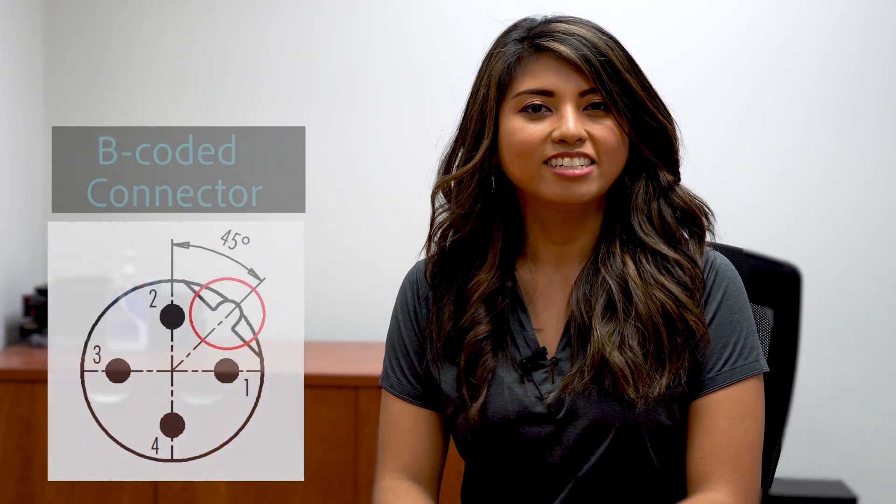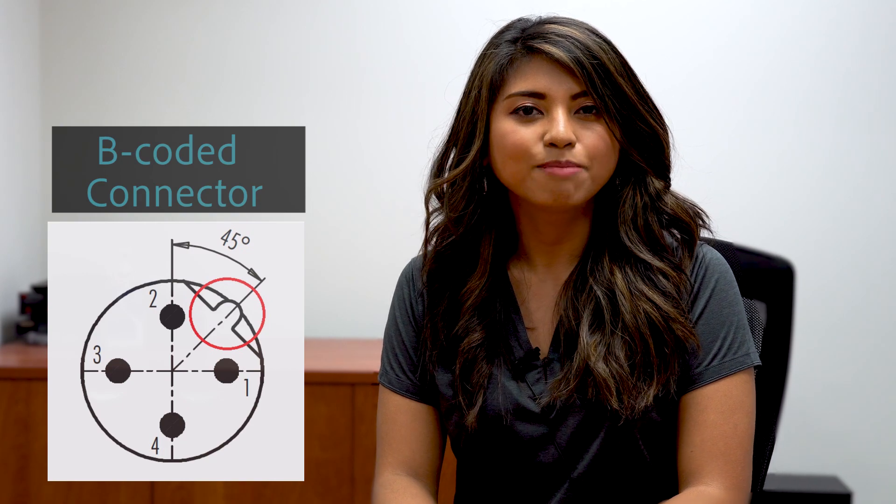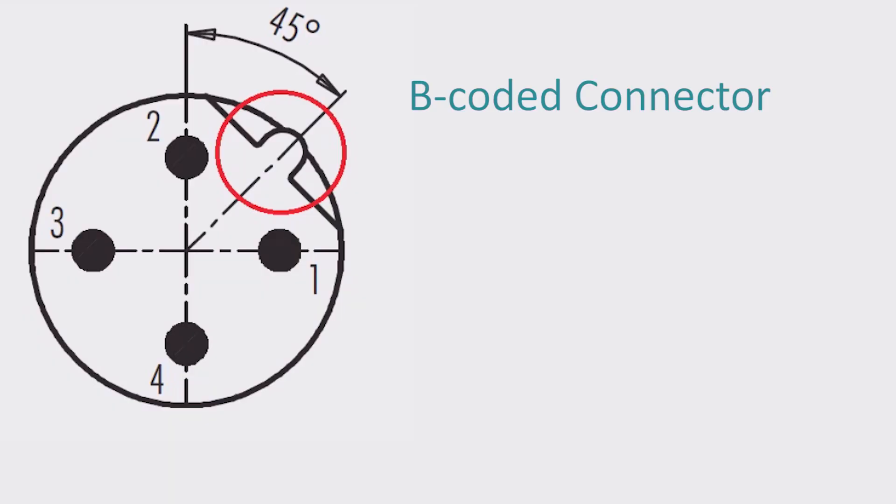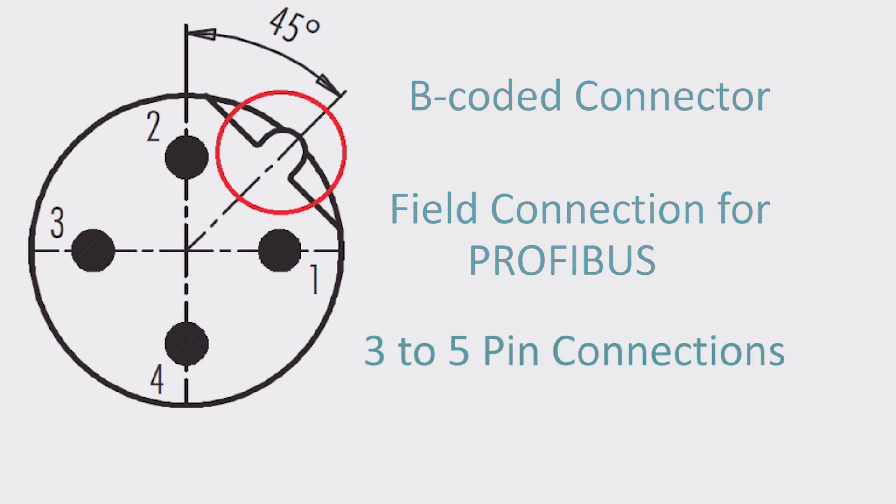The next connector in this group is the B-coded connector, and this can be differentiated by the singular reverse keyway as shown on the diagram. This connector type is not as heavily used in the US, but has AC applications in Europe. The B-coded connector primarily functions as a field bus connection for profibus and interbus, and it typically comes in anywhere between 3 to 5 pin connections.